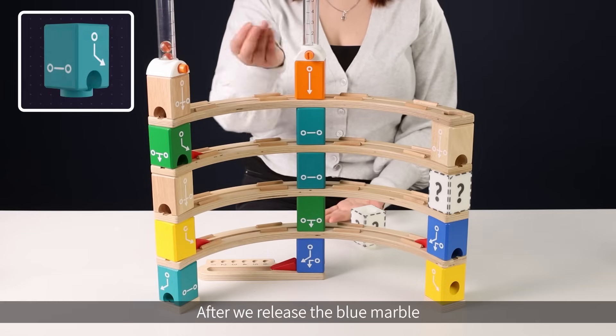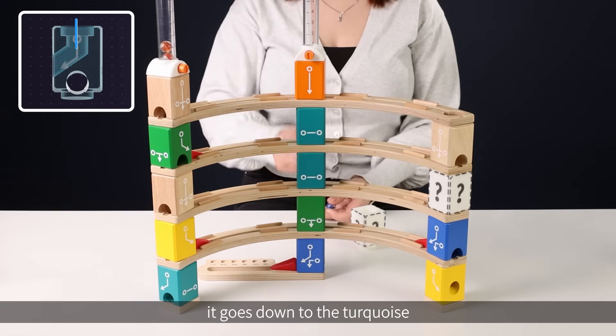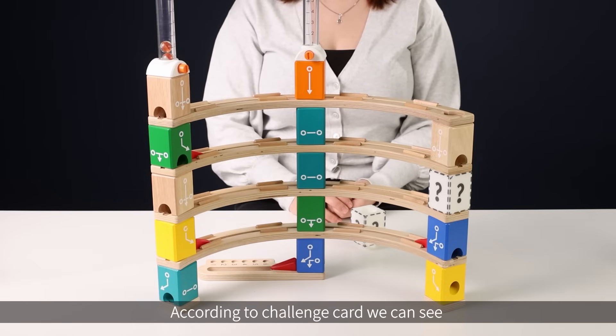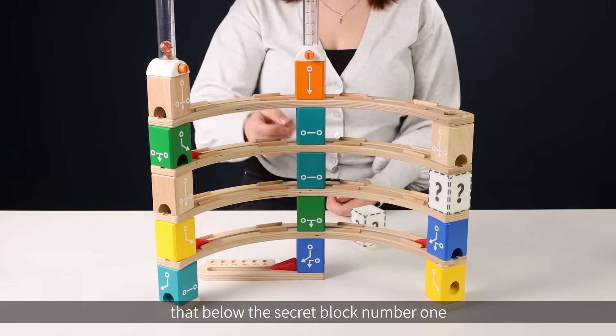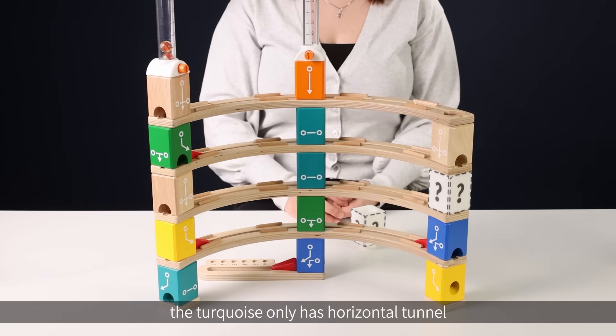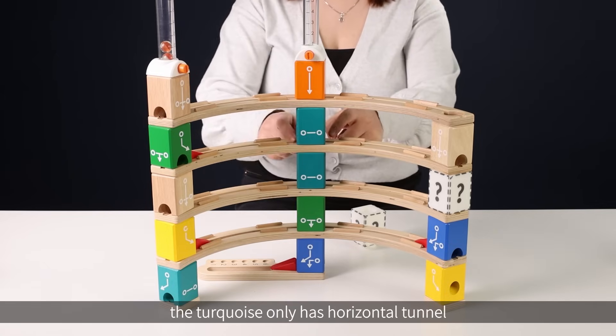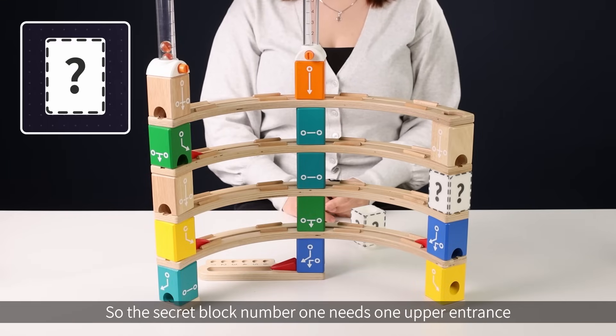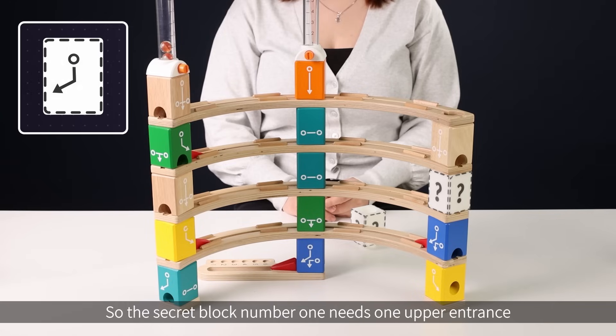After we release the blue marble, it goes down to the turquoise and rolls out of the building. According to challenge card, we can see that below the secret block number 1, the turquoise only has horizontal tunnel, which means the marble cannot pass from the upper side. So the secret block number 1 needs one upper entrance and one side exit.